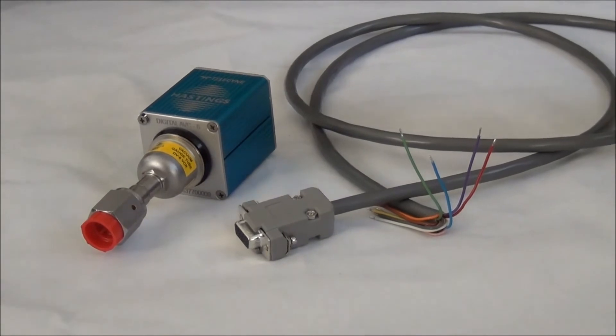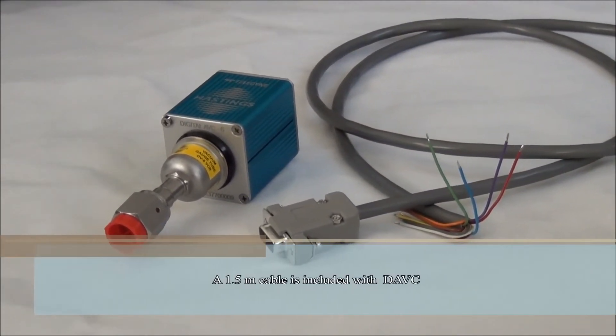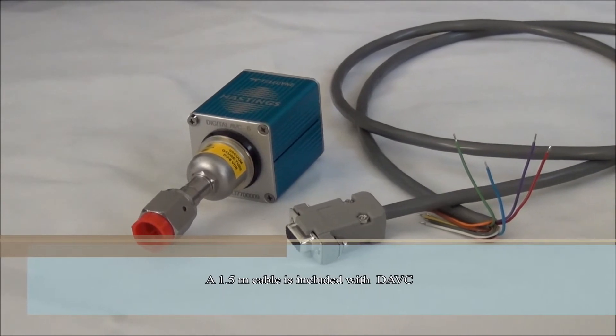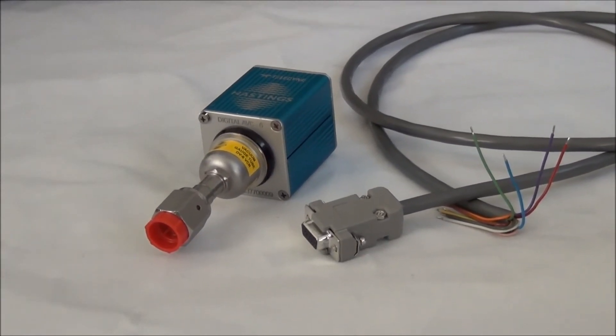Teledyne provides a 1.5-meter cable with the DAVC, and the color code is given on the inputs. There's also a wiring label on the outside cover, so that makes it convenient to find the wiring.